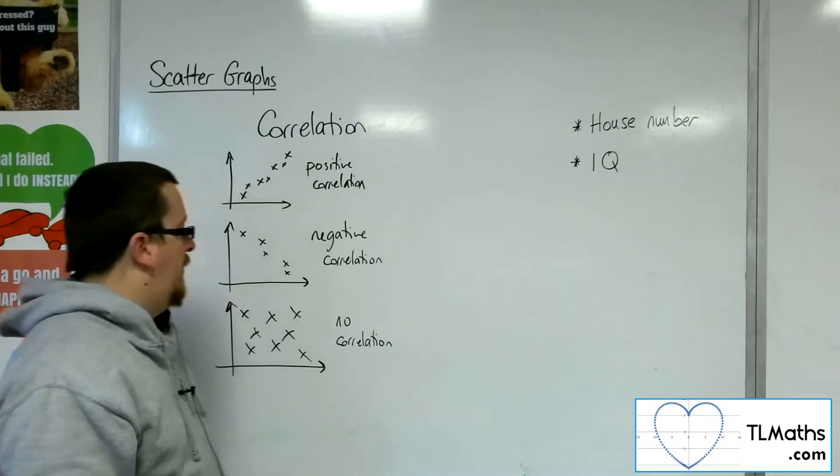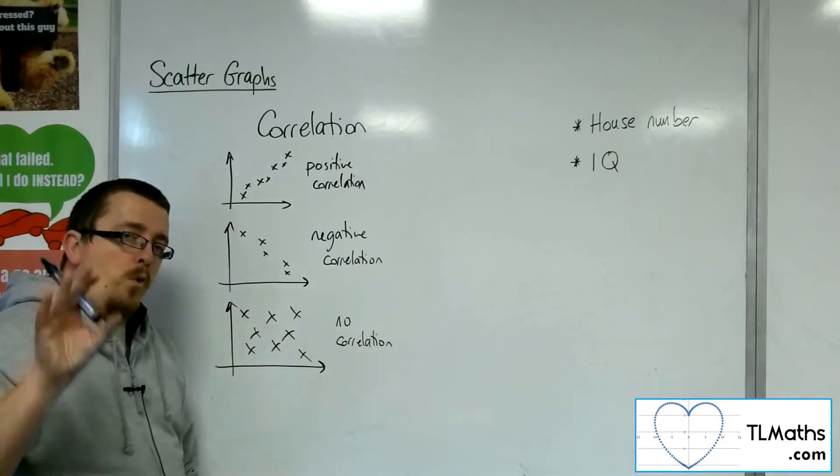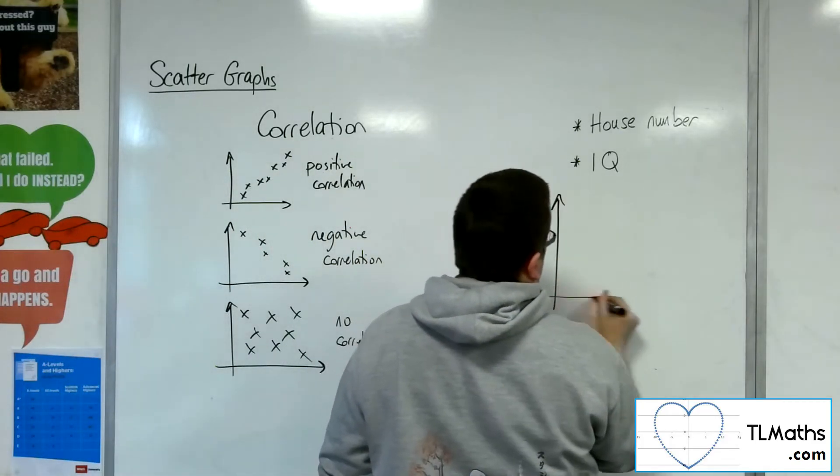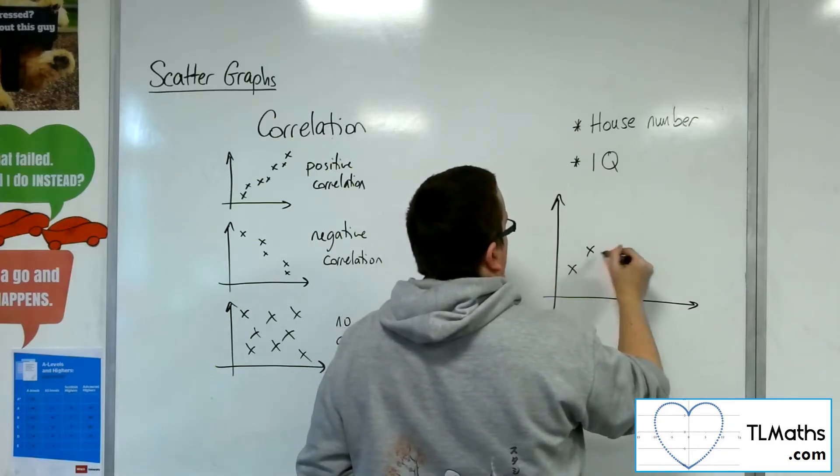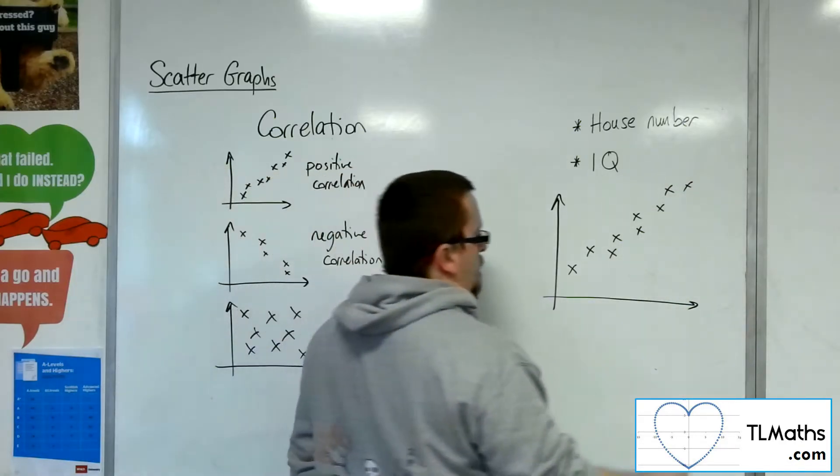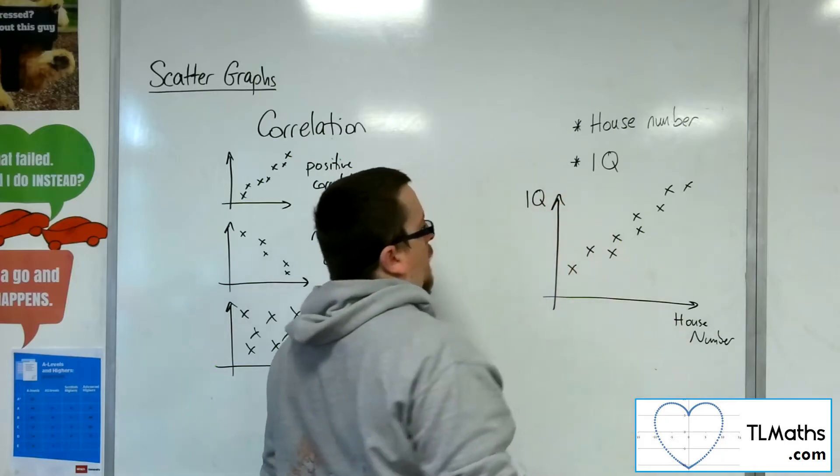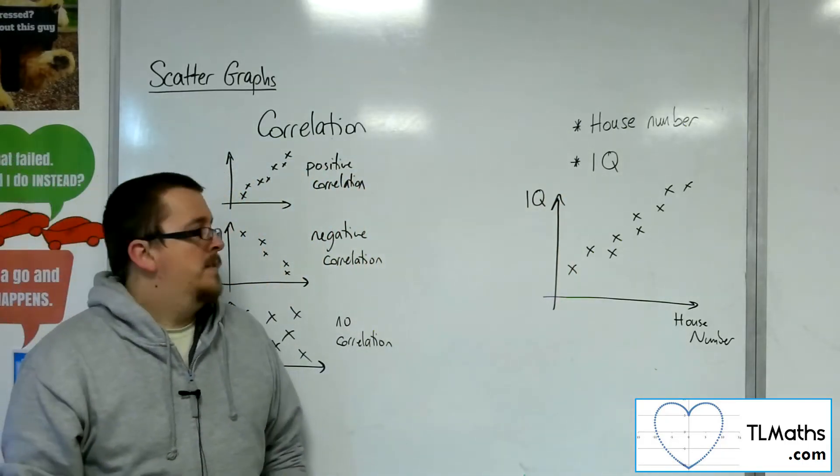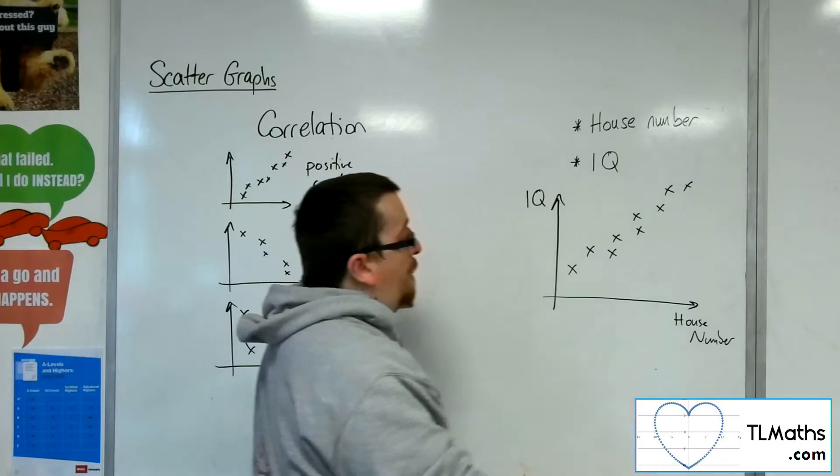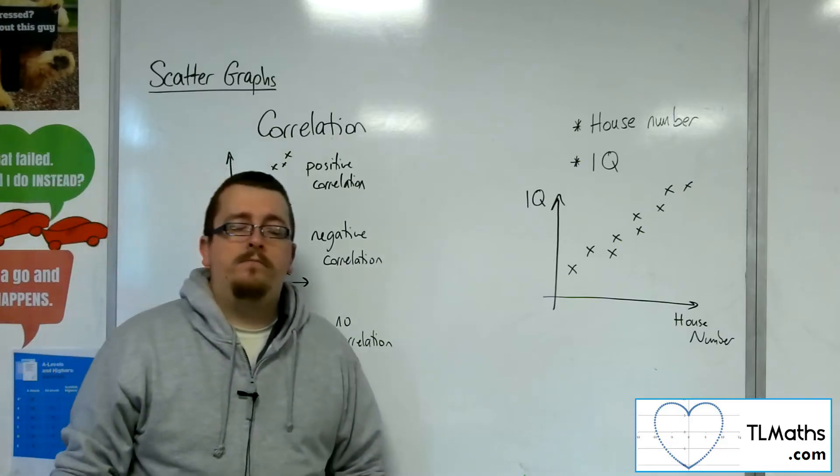So we would be expecting the data to look like that. But what if, upon collecting this data, when I plot the graph, the data points actually look like this? And it turned out that from the sample I'd been looking at, you could infer that the higher the house number, the higher the IQ.